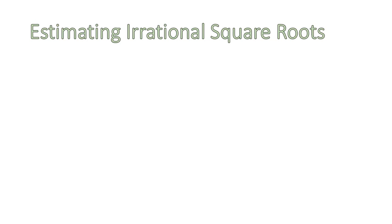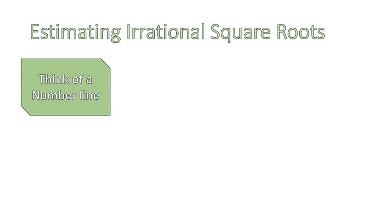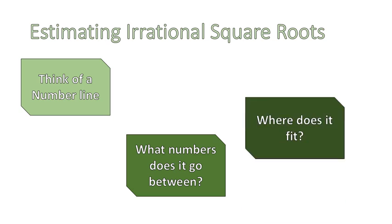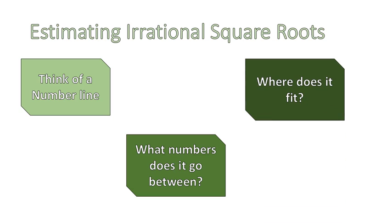First, we have to estimate some irrational square roots — this is going to be the bulk of what we focus on today: where to put irrational square roots on a number line. There are three steps: think of a number line, ask what number the irrational square root goes between, and then find where it fits.